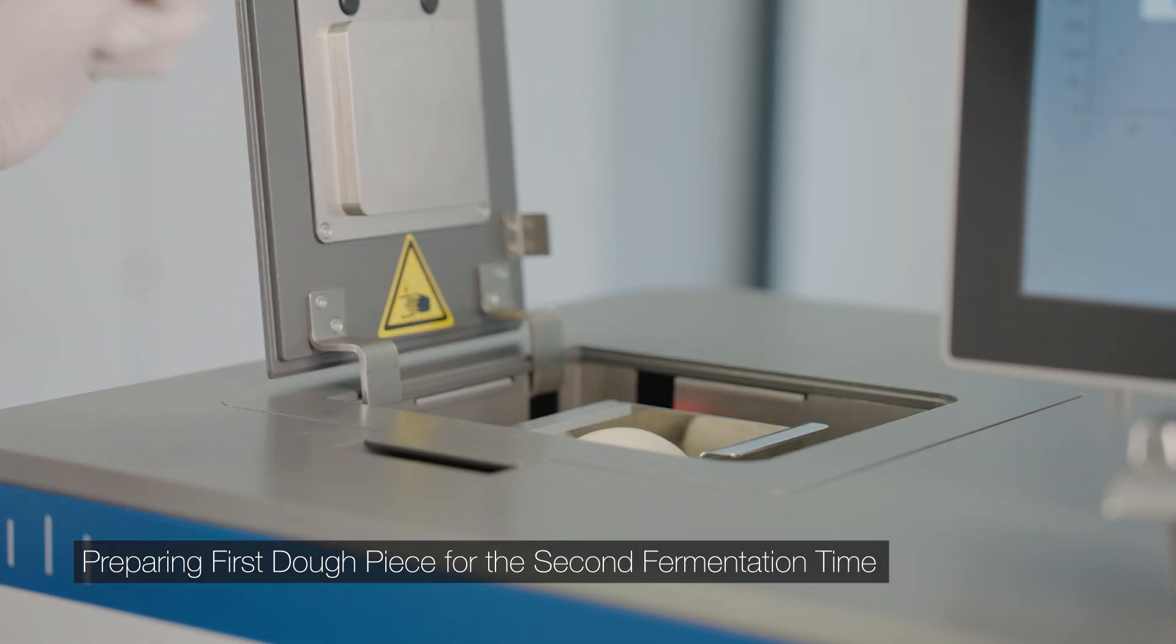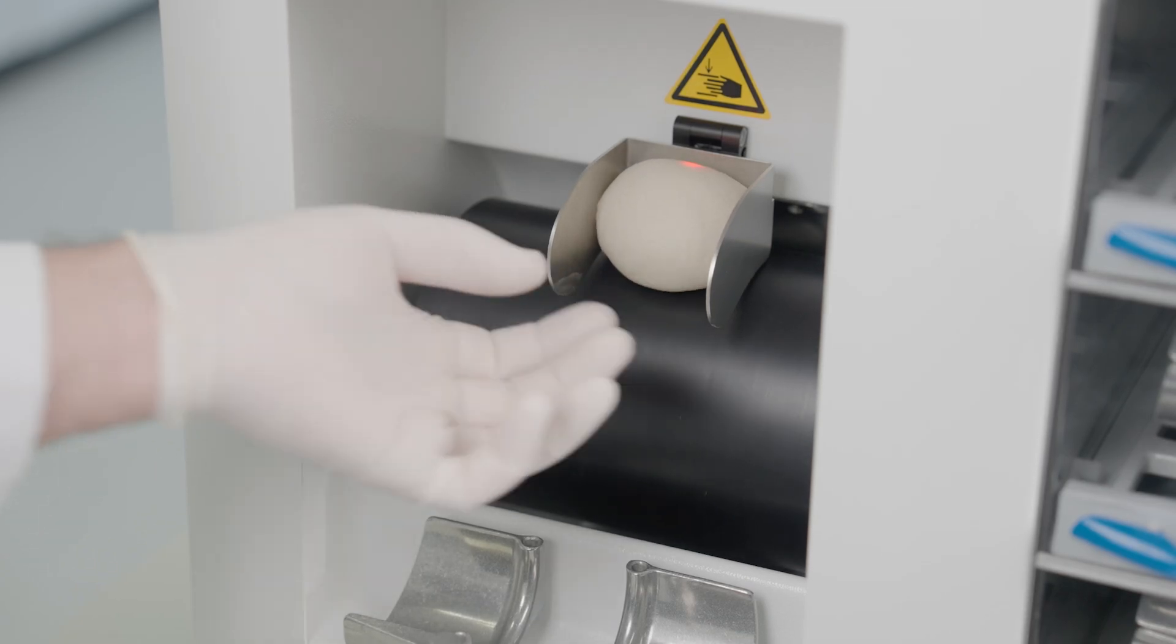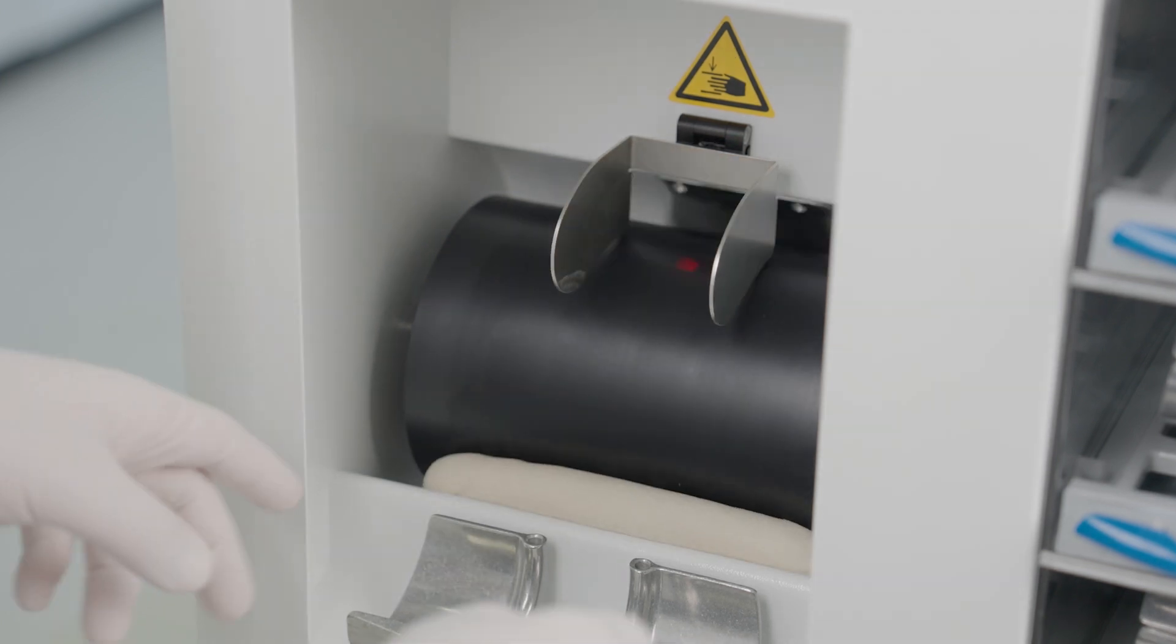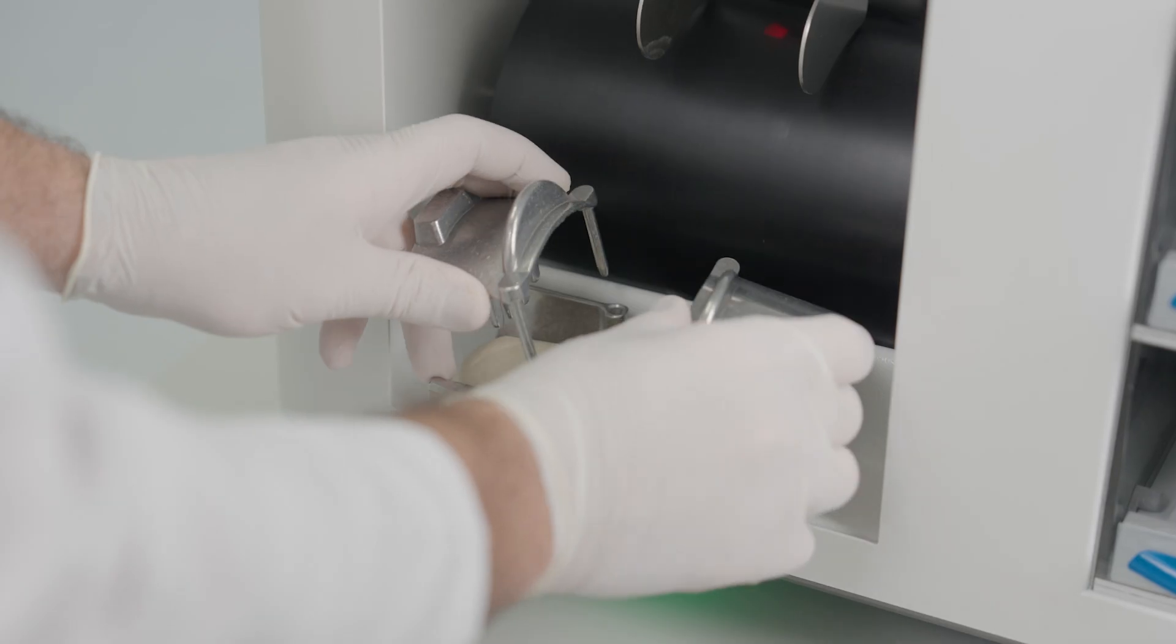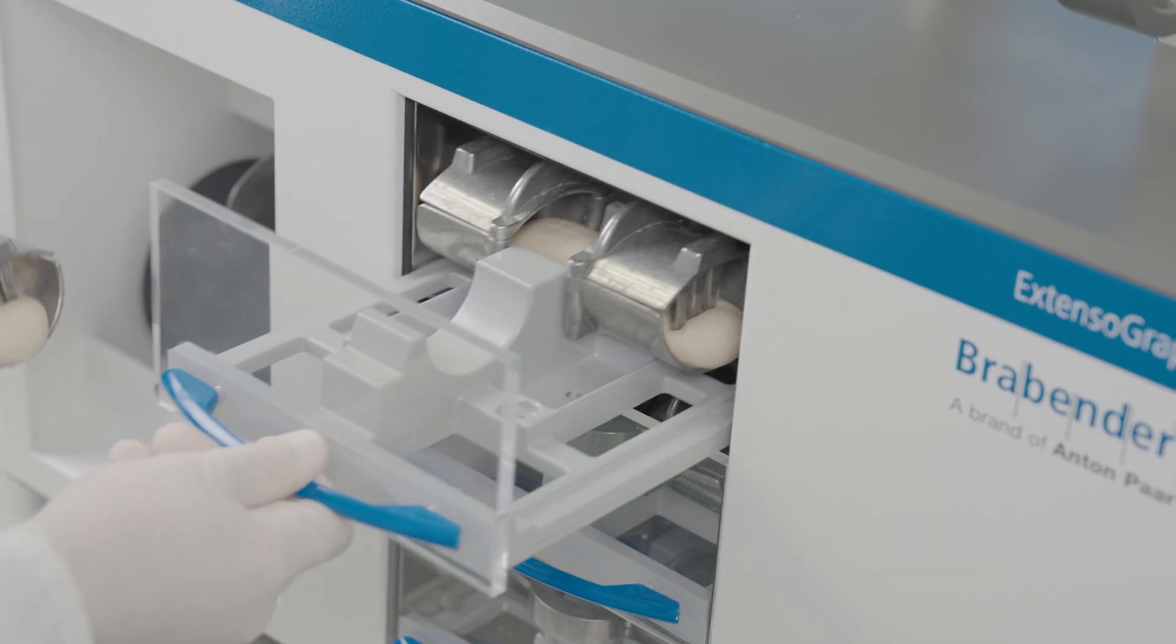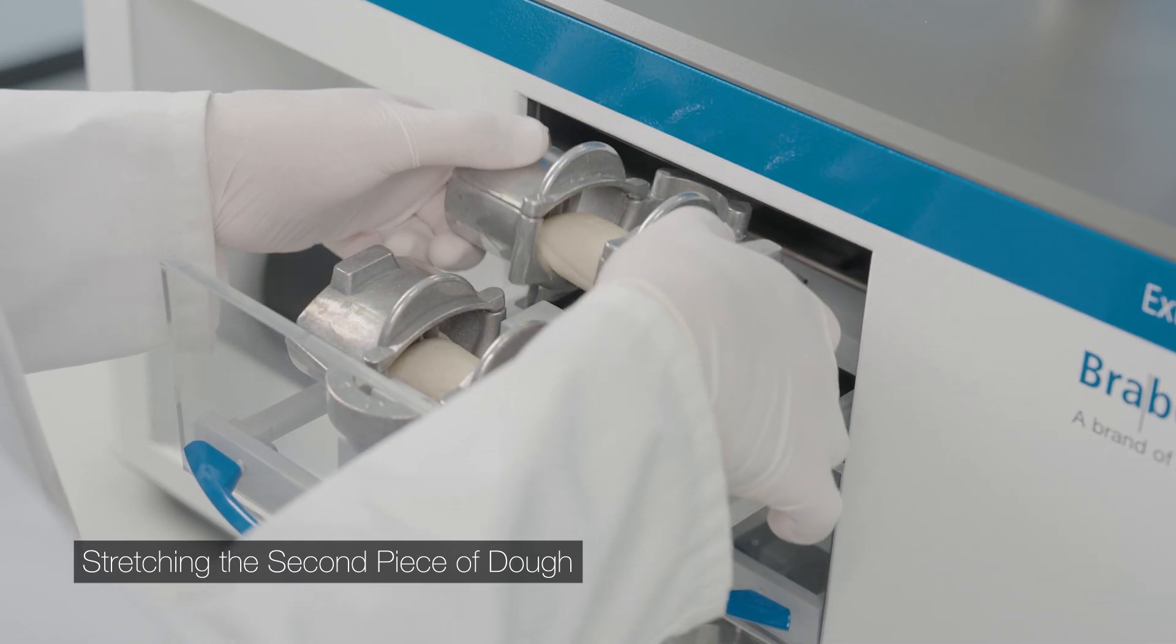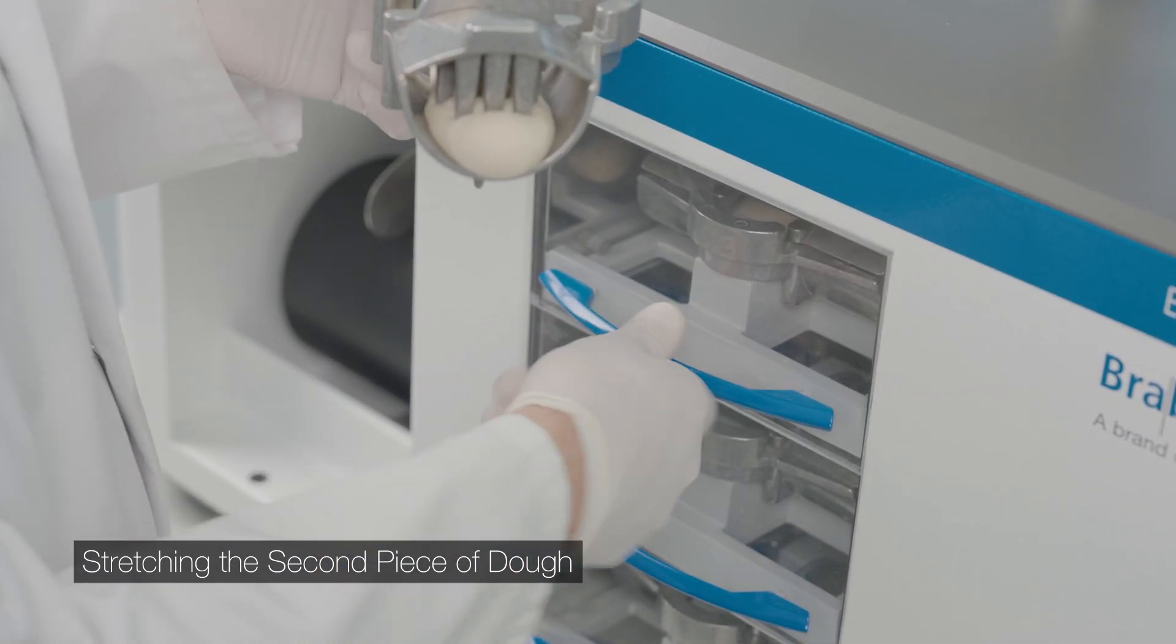Homogenize the piece of dough in the balling unit, then shape it with the dough roll. Place the dough strand in the tray and fix it with the clamps. Insert the tray into the fermentation cabinet and put the second sample onto the stretching device.